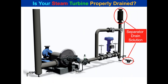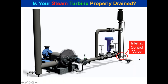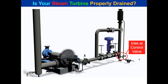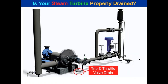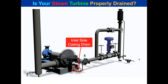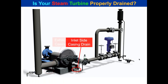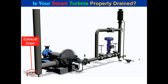We put a separator drain location with a CDL to remove already-disentrained condensate, then a separator to remove entrained condensate. The engineered separated drain solution includes an inlet trap to the control valve, a trip and throttle valve — often just plugged with no traps — casing drain on the inlet side, casing drain on the outlet side, and an exhaust drain.